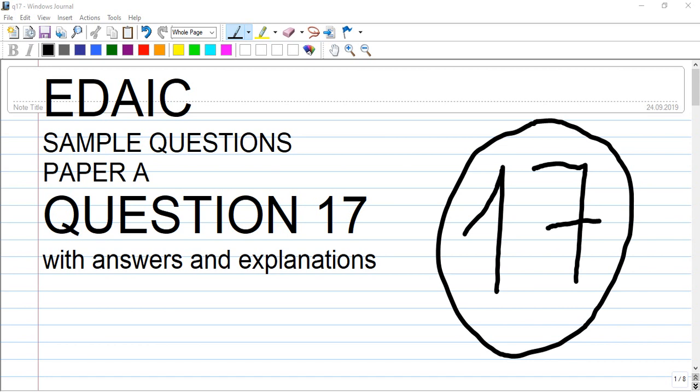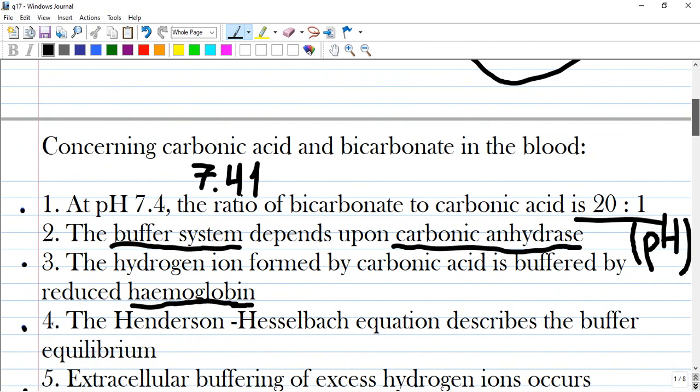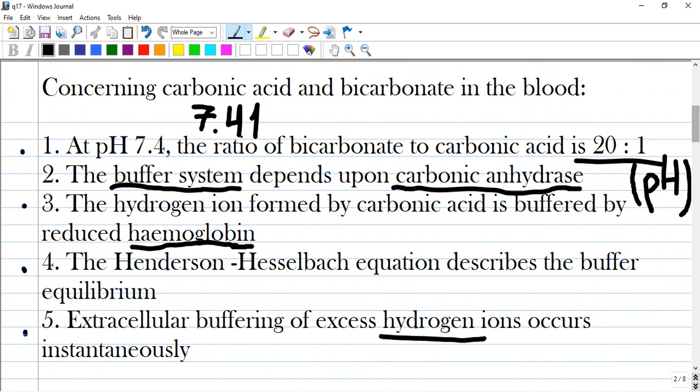A new question number 17 from edike sample question paper official website. This is a type of question that not everyone likes but you should know many facts for going to exam. So it is concerning carbonic acid and bicarbonate in the blood.